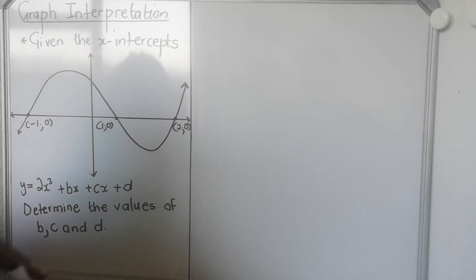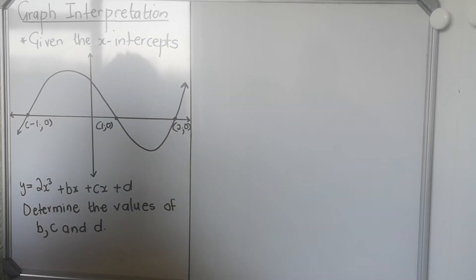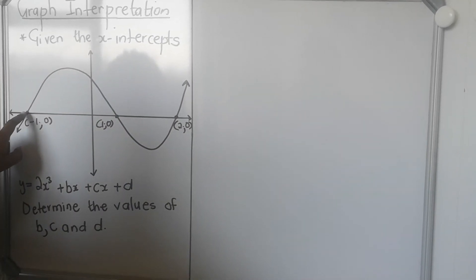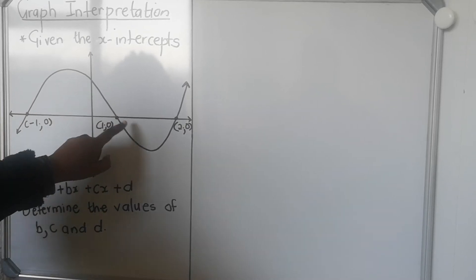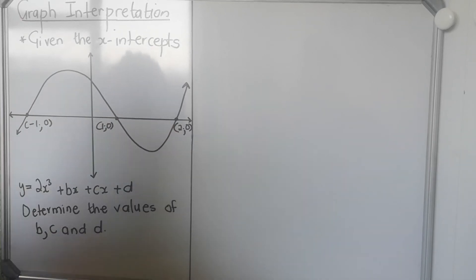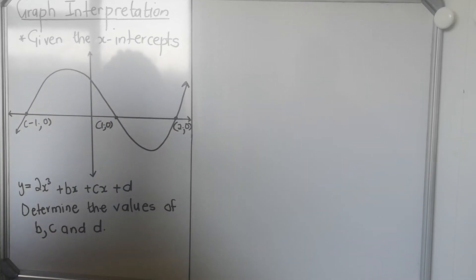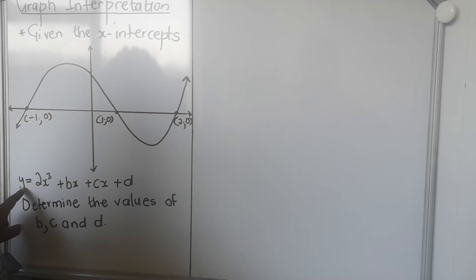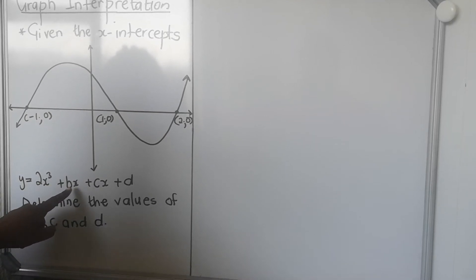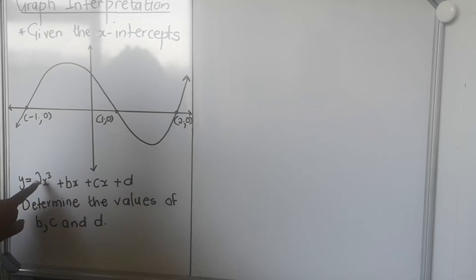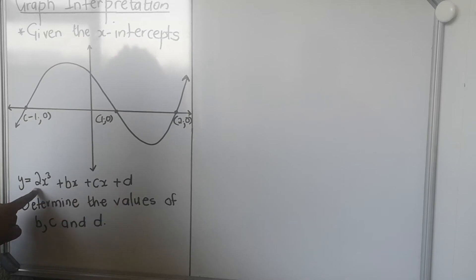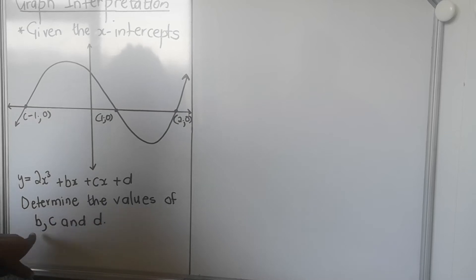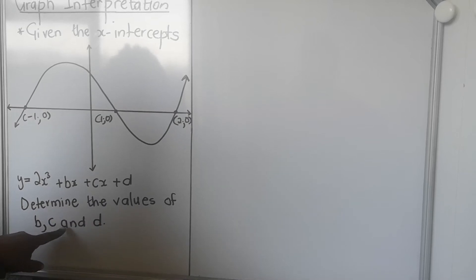The first one is when they've given you x-intercepts. They will not tell you that it's the x-intercept — it's one thing you can see in the graph where it cuts the x-axis, then you have x-intercepts. They will give you a formula as well. Here they've given us y is equal to 2x squared plus bx plus cx plus d. They're actually giving us our 'a'. Then they say determine the value of b, c, and d.